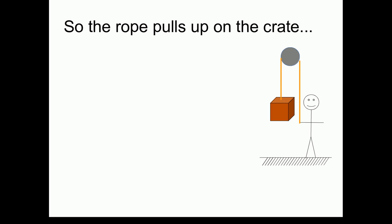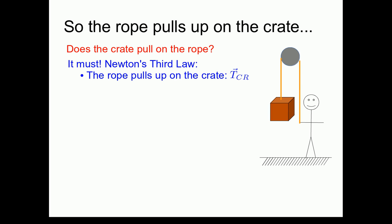So now we've determined that the tension in the rope is what pulls up on the crate and balances the force of the weight pulling it down. Does the crate also pull down on the rope? It absolutely must, by Newton's third law. Newton's third law states that if the rope pulls up on the crate, then the crate must pull down on the rope with a force that's equal in magnitude and opposite in direction.